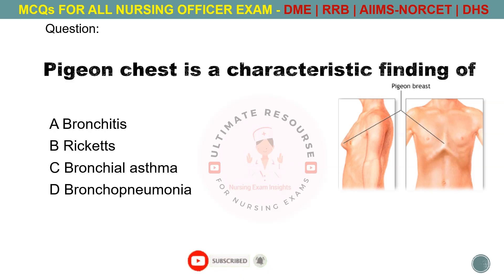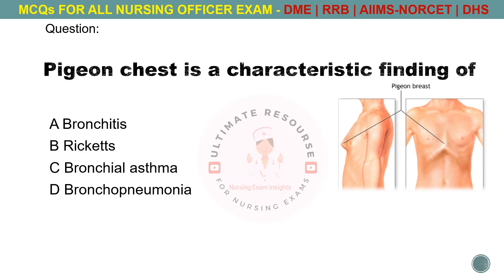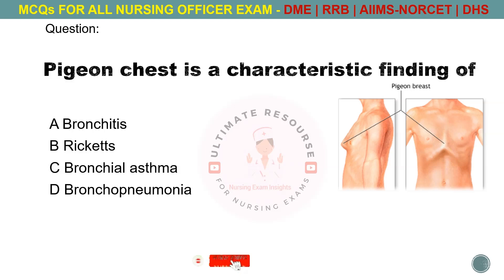Pigeon chest is a characteristic finding in. Options are A. Bronchitis, B. Rickets, C. Bronchial asthma, D. Bronchopneumonia. The answer is B. Rickets.